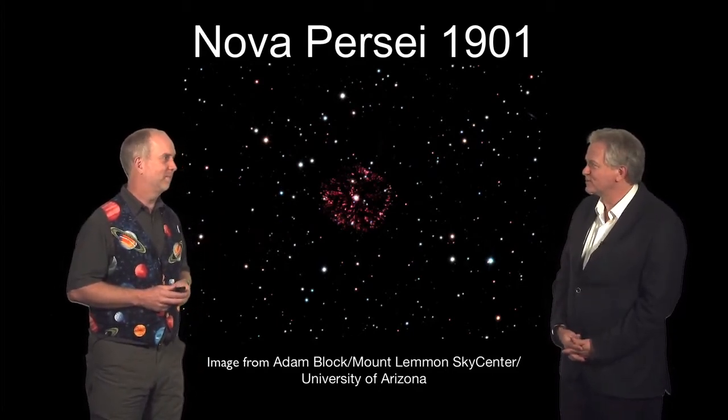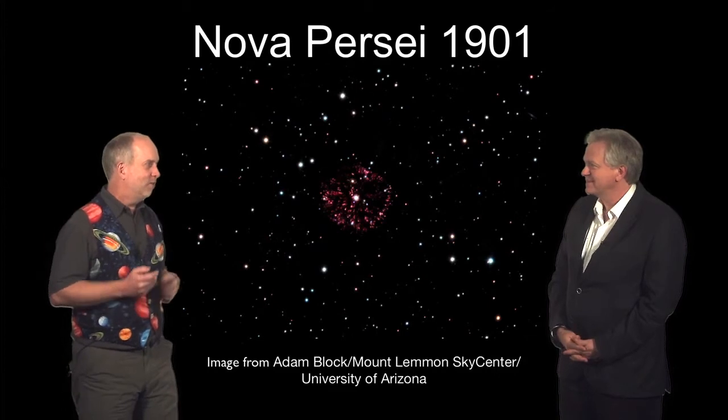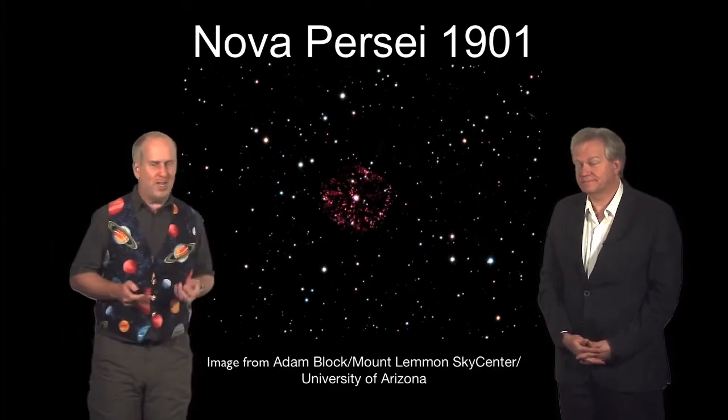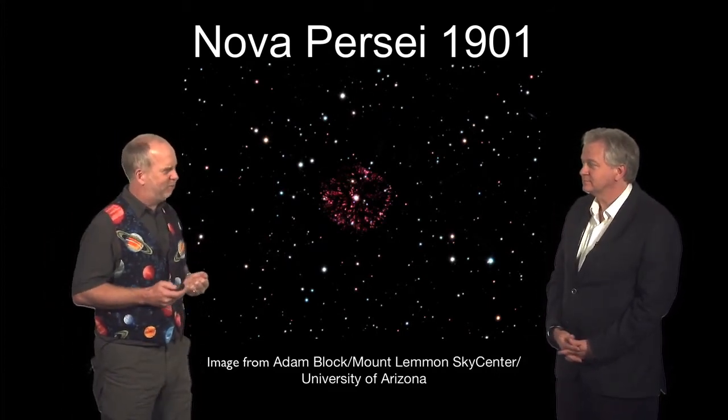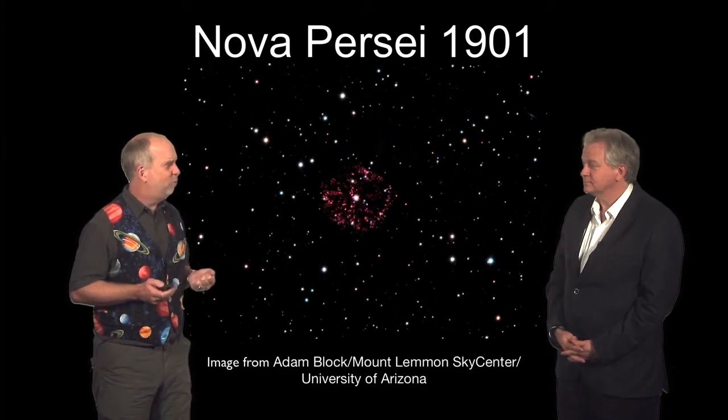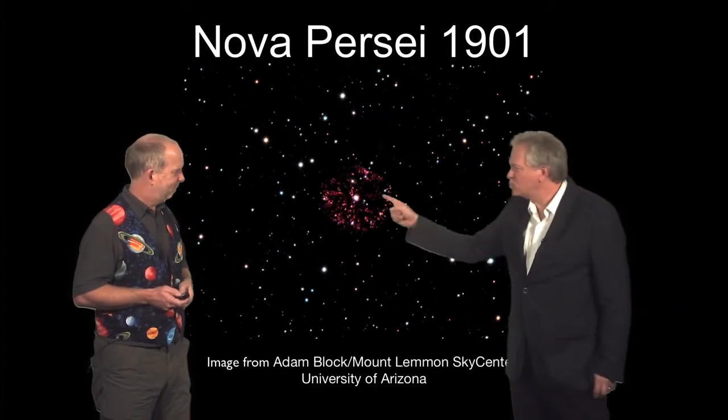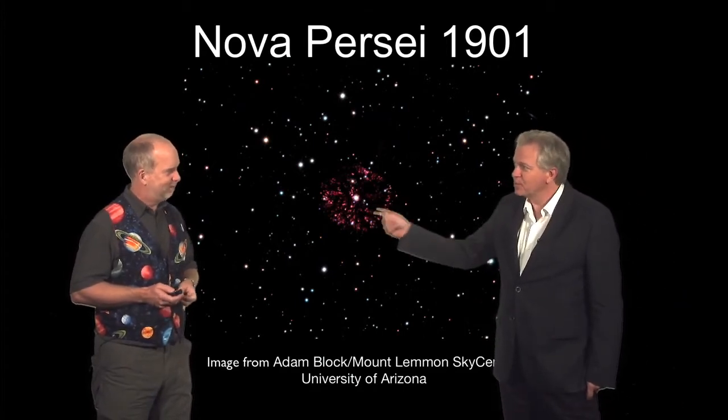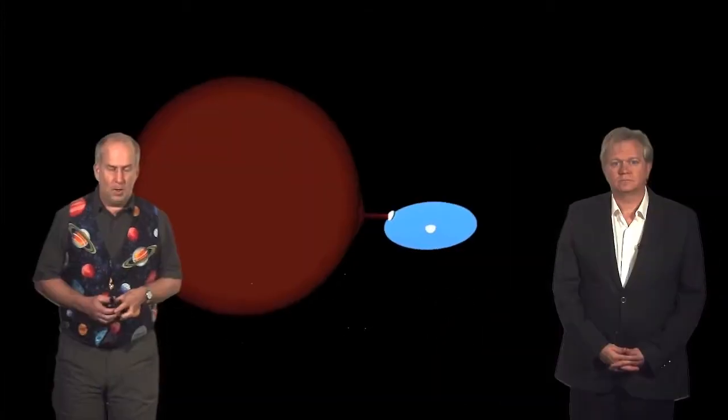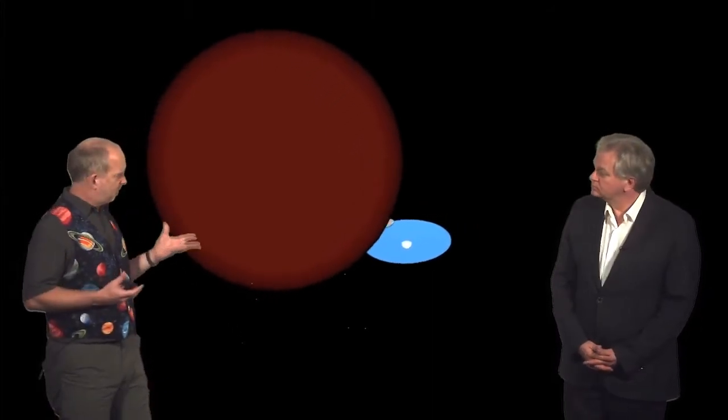Ooh, that is an interesting clue, isn't it? So it looks like the dwarf novae and the classical novae are actually kind of the same thing, two different ways in which the same thing can explode. So that suggests that we have a white dwarf, once again, responsible for what's going on.